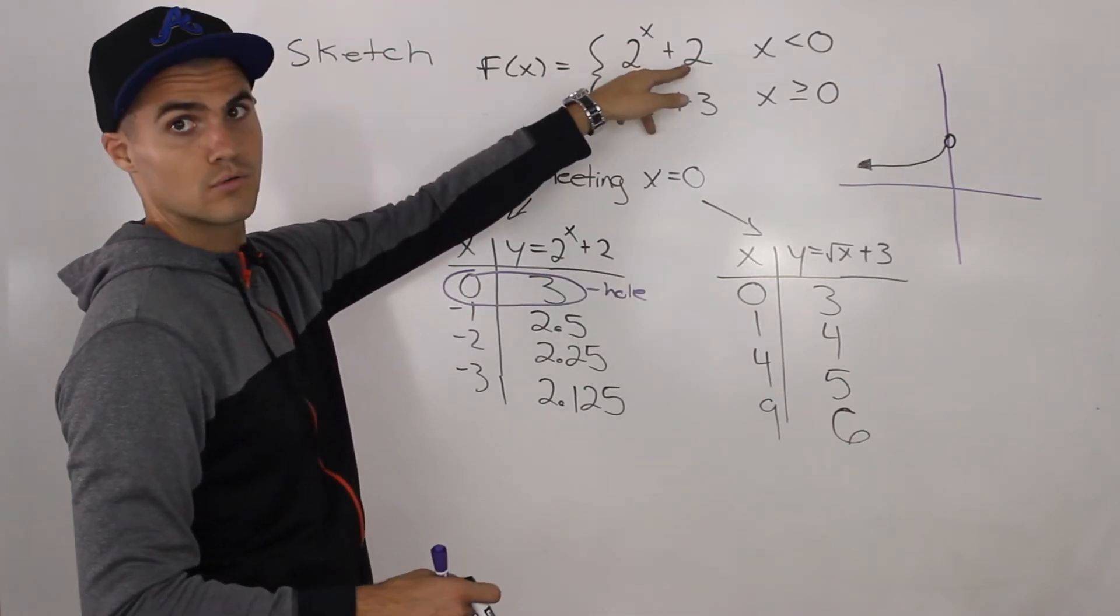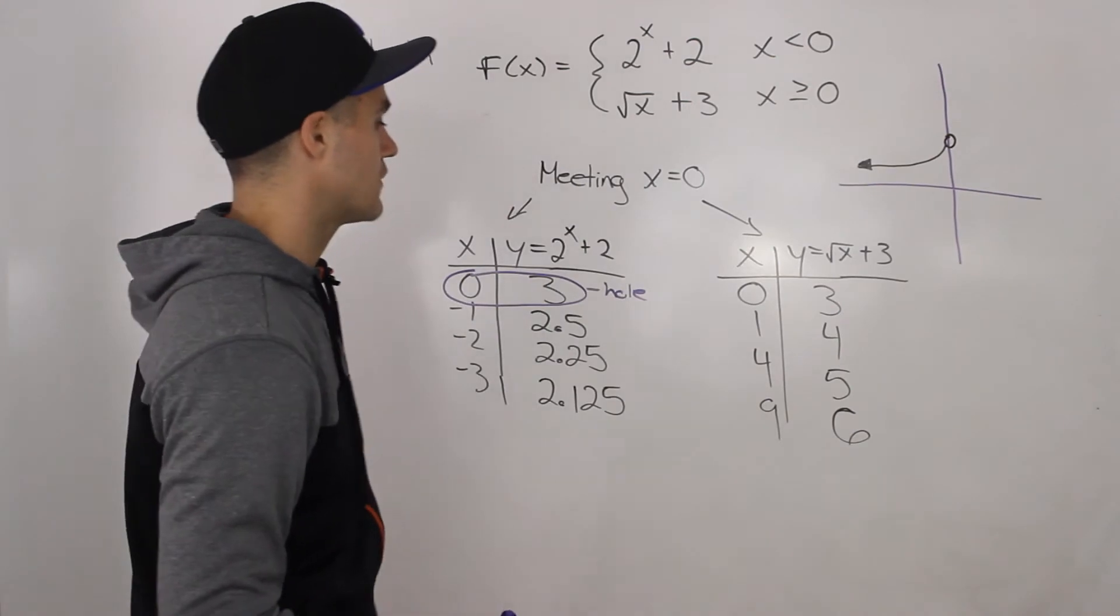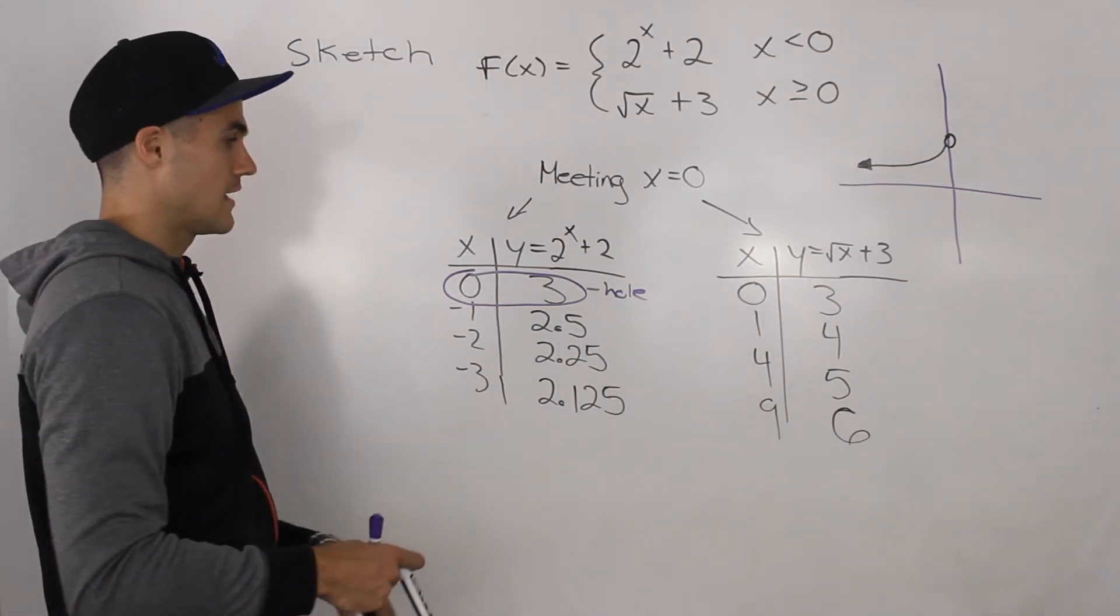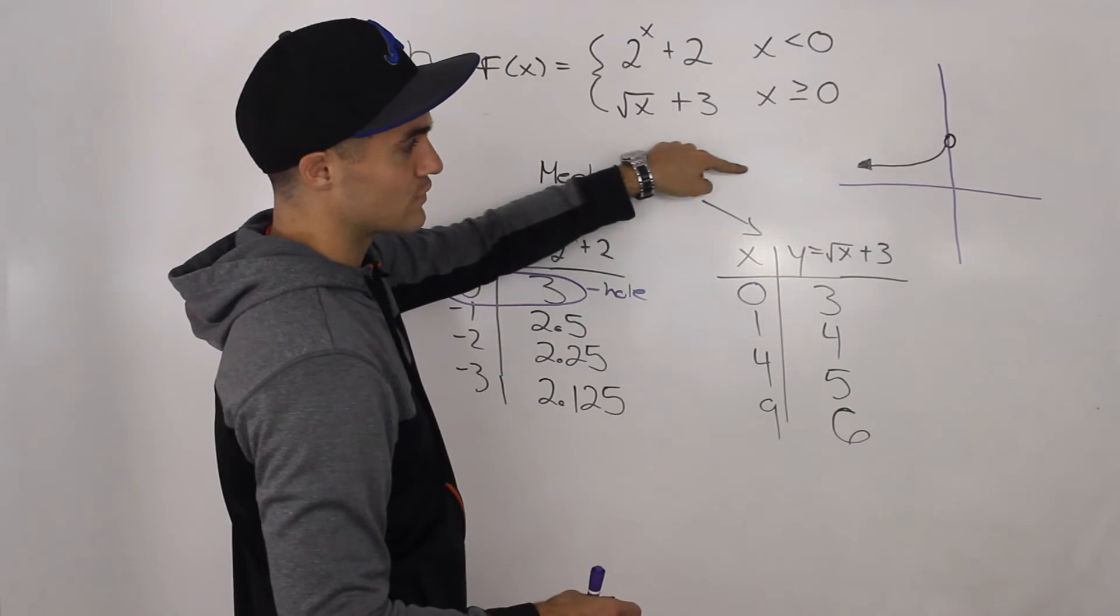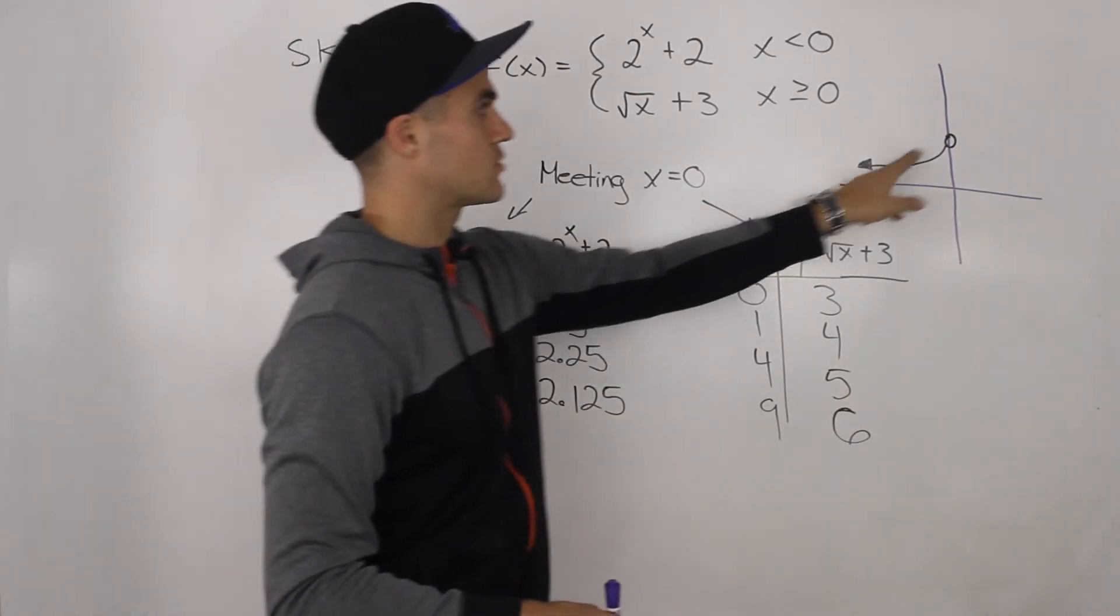Well, if we shift it up by two, then the horizontal asymptote is now going to be at that y value of two. So it's going to get closer and closer to two as x goes to negative infinity, but it's never going to hit it. So this is the left portion of graph.